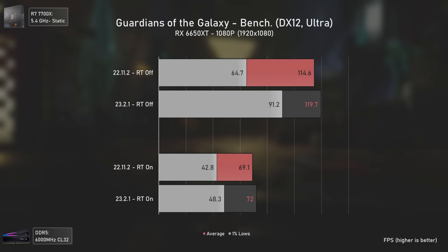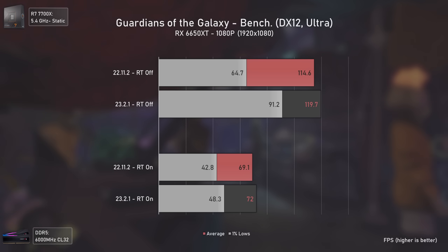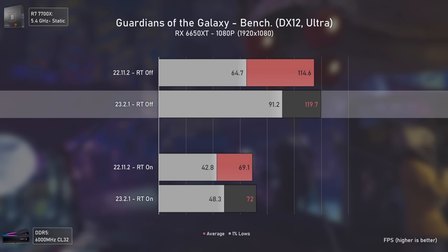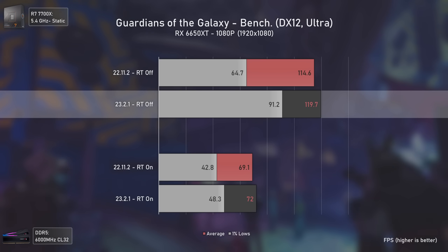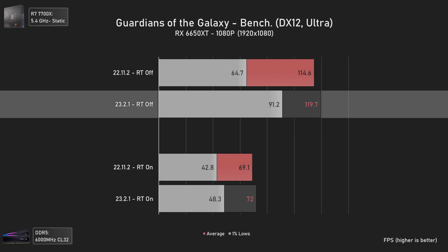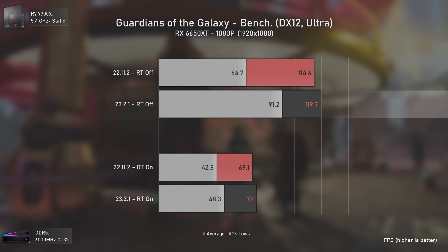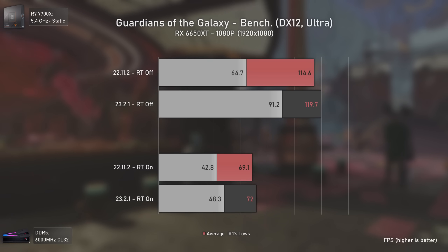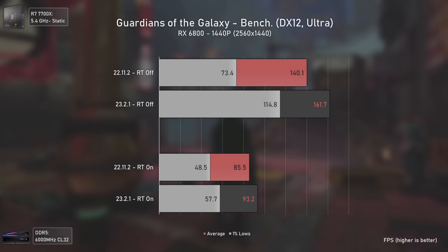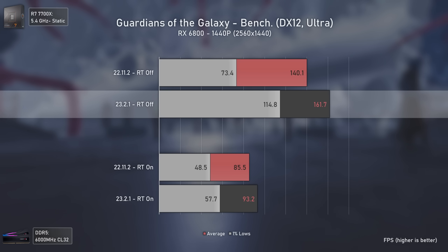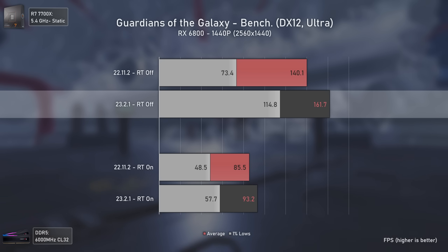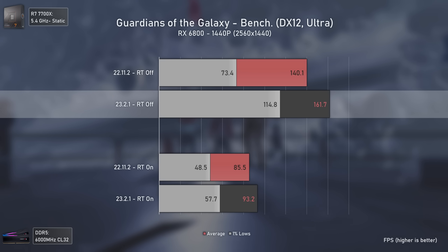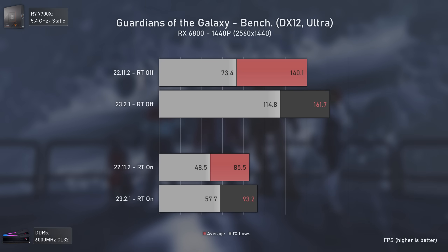Guardians of the Galaxy is one of those games where AMD stated a performance uplift. At 1080p, the RX 6650 XT had a mild increase in averages but a huge increase in 1% lows, going from 64.7 to 91.2 FPS — a 41% increase. Ray tracing changes were less noticeable due to lower FPS output. With the RX 6800, things are even crazier: a 56% increase in 1% lows and 15% increase in averages, leading to a much smoother experience, with ray tracing also getting a noticeable boost.